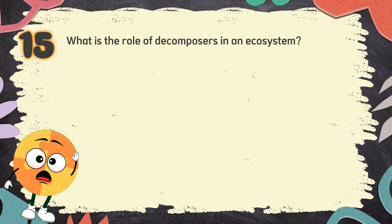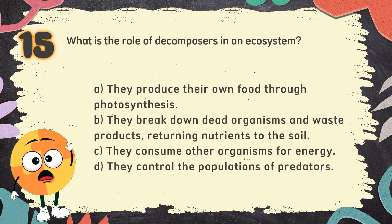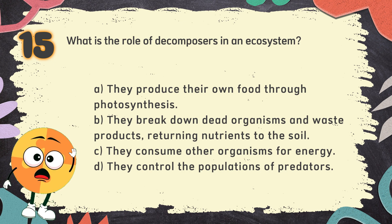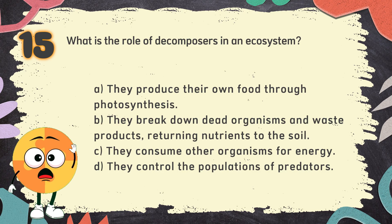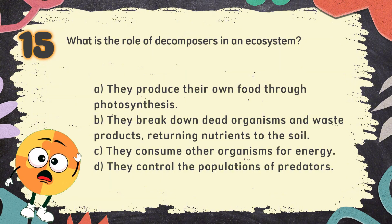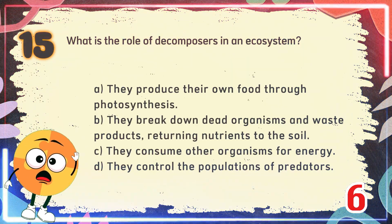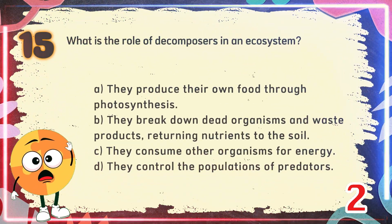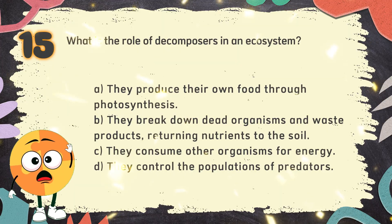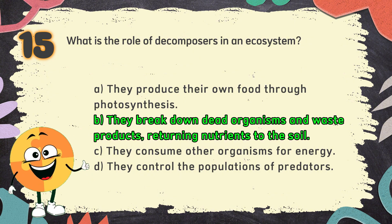Number 15. What is the role of decomposers in an ecosystem? The choices are A. They produce their own food through photosynthesis, B. They break down dead organisms and waste products returning nutrients to the soil, C. They consume other organisms for energy, D. They control the populations of predators. The correct answer is B. They break down dead organisms and waste products, returning nutrients to the soil.